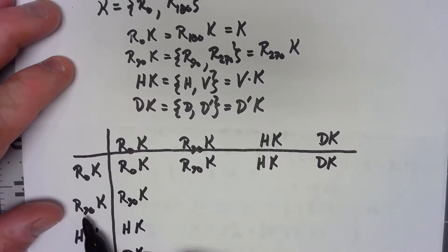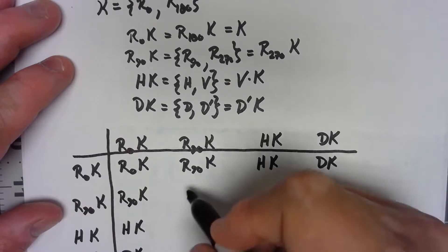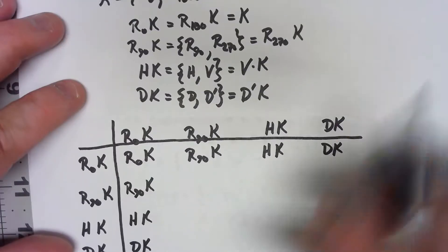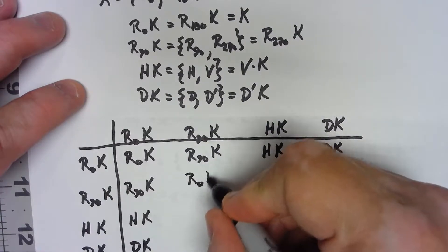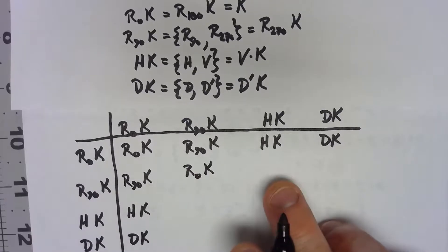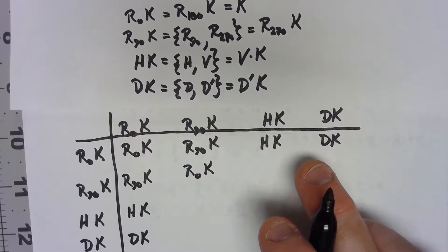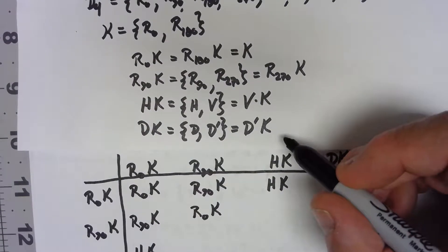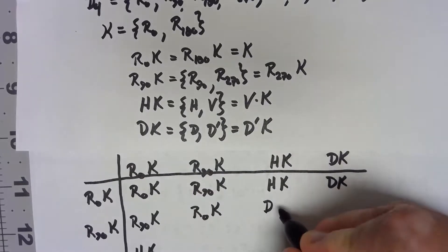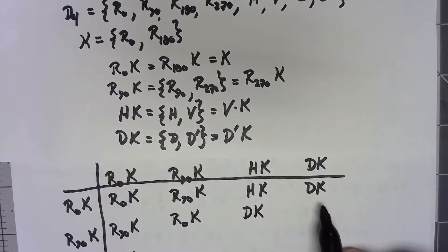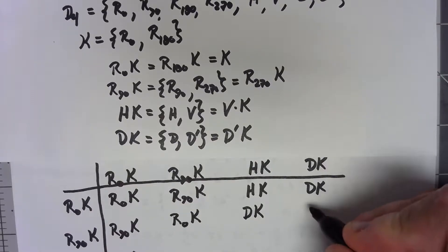Now when I go here, R90K times R90K is going to give me R180K, but R180K is the same thing as R0K. R90 times H is D prime, so this is going to be D prime K, but again looking up here D prime K is the same thing as DK. R90 times D is H, so this is HK.